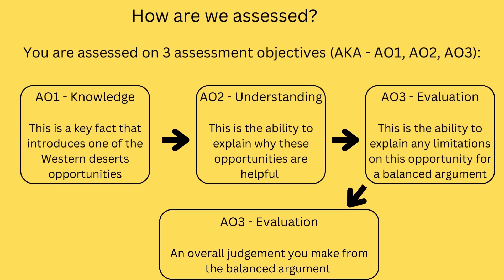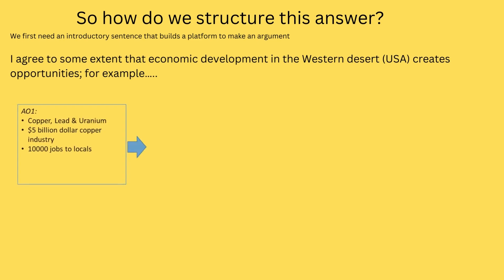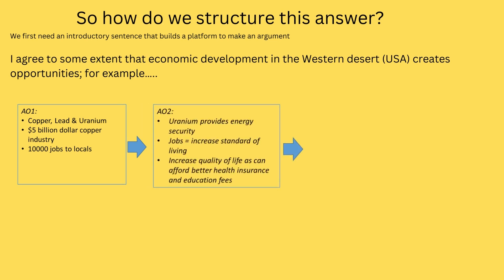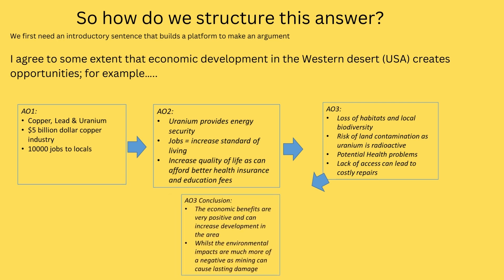This is then followed by an overall judgement. To answer this question we need first a statement that introduces our answer. Next we need some knowledge — we know that mining copper, lead and uranium is practised in the Western Desert and we have some facts that go with it. To explain its effectiveness, we know that uranium provides energy security for nuclear power, and that jobs increase standard of living and quality of life. But we also know about the damage to habitats, the threat of radioactive material, and the lack of access that can make these minerals costly. So now that we have our arguments, we need to base a conclusion on this.